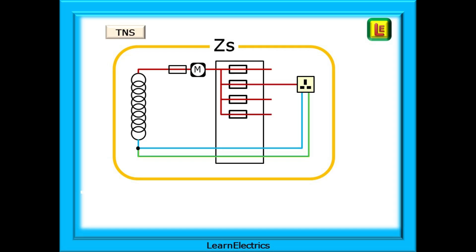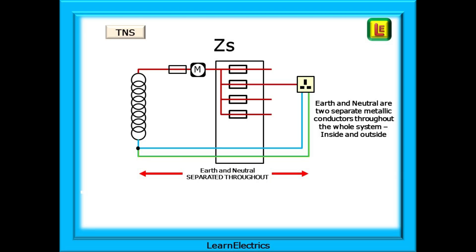Starting at the bottom of the supply transformer, on the left, we can see that there is a physical connection between the Earth and the Neutral at the transformer. But, from that moment, from the moment that they leave the transformer, Earth and Neutral each have their own conductor. From now on, they never share. All the way to the consumer unit, through the consumer unit, and on to every point of use, they are kept separate. TNS, Earth and Neutral Separate.